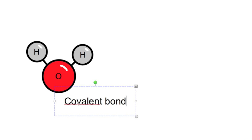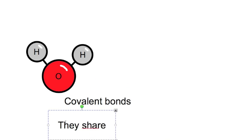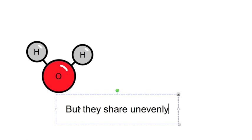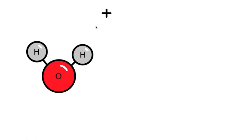These three atoms are held together with what's called a covalent bond. This means that they share electrons. They don't share electrons evenly though. The oxygen actually pulls on the electrons a little harder than the hydrogen does.